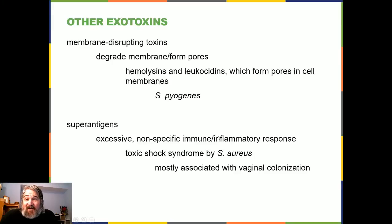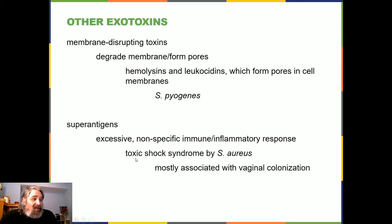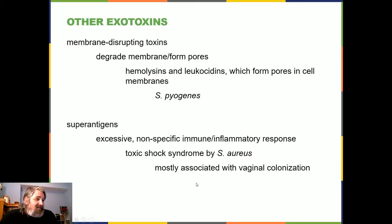Other exotoxins include membrane-disrupting toxins. Streptococcus pyogenes hemolysins and leukocidins form pores to degrade membranes. Superantigens cause toxic shock syndrome nonspecifically. Toxic shock syndrome is mostly associated with vaginal colonization and is commonly discussed in the context of tampon use — leaving one in too long risks colonization by bacteria that could cause toxic shock syndrome.